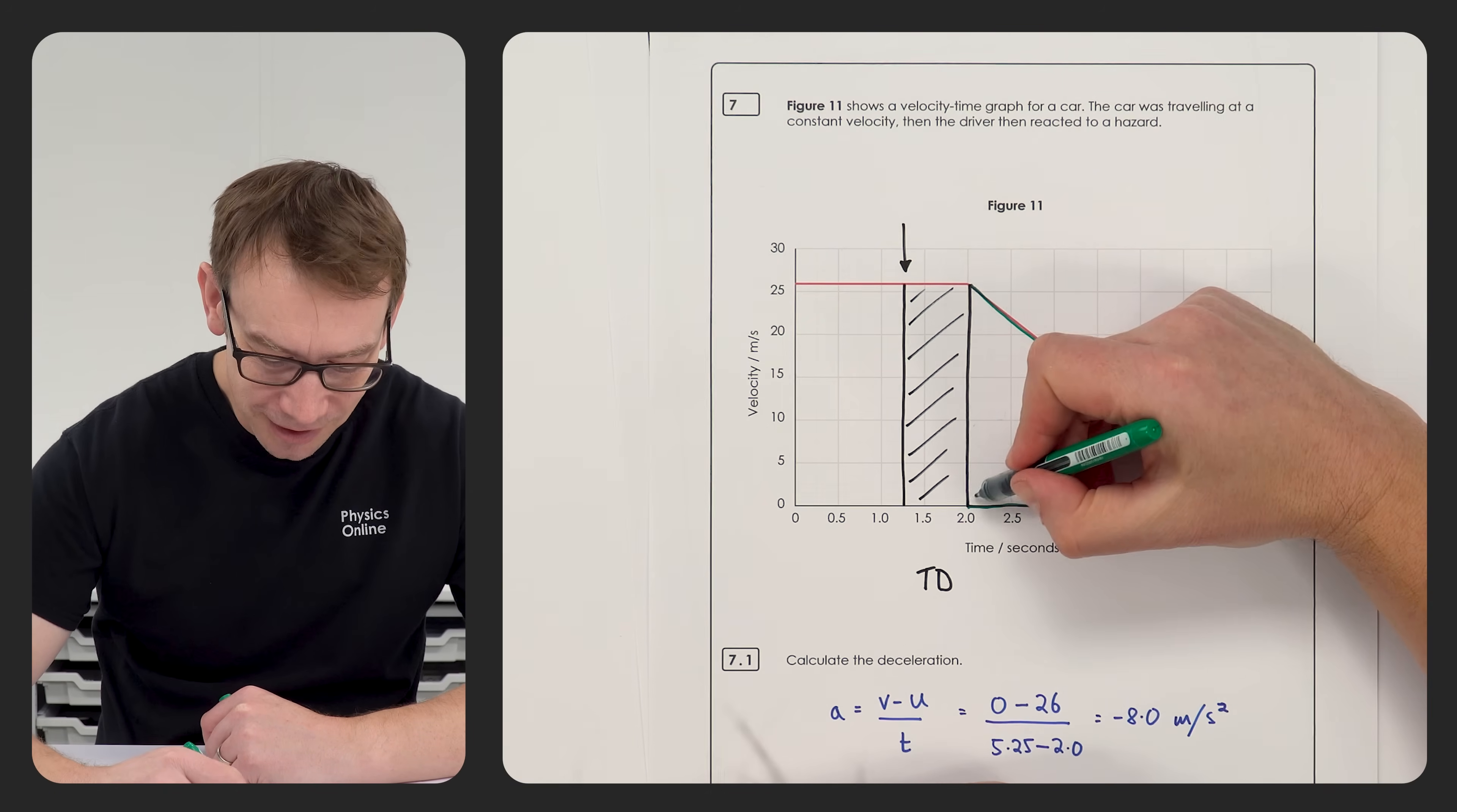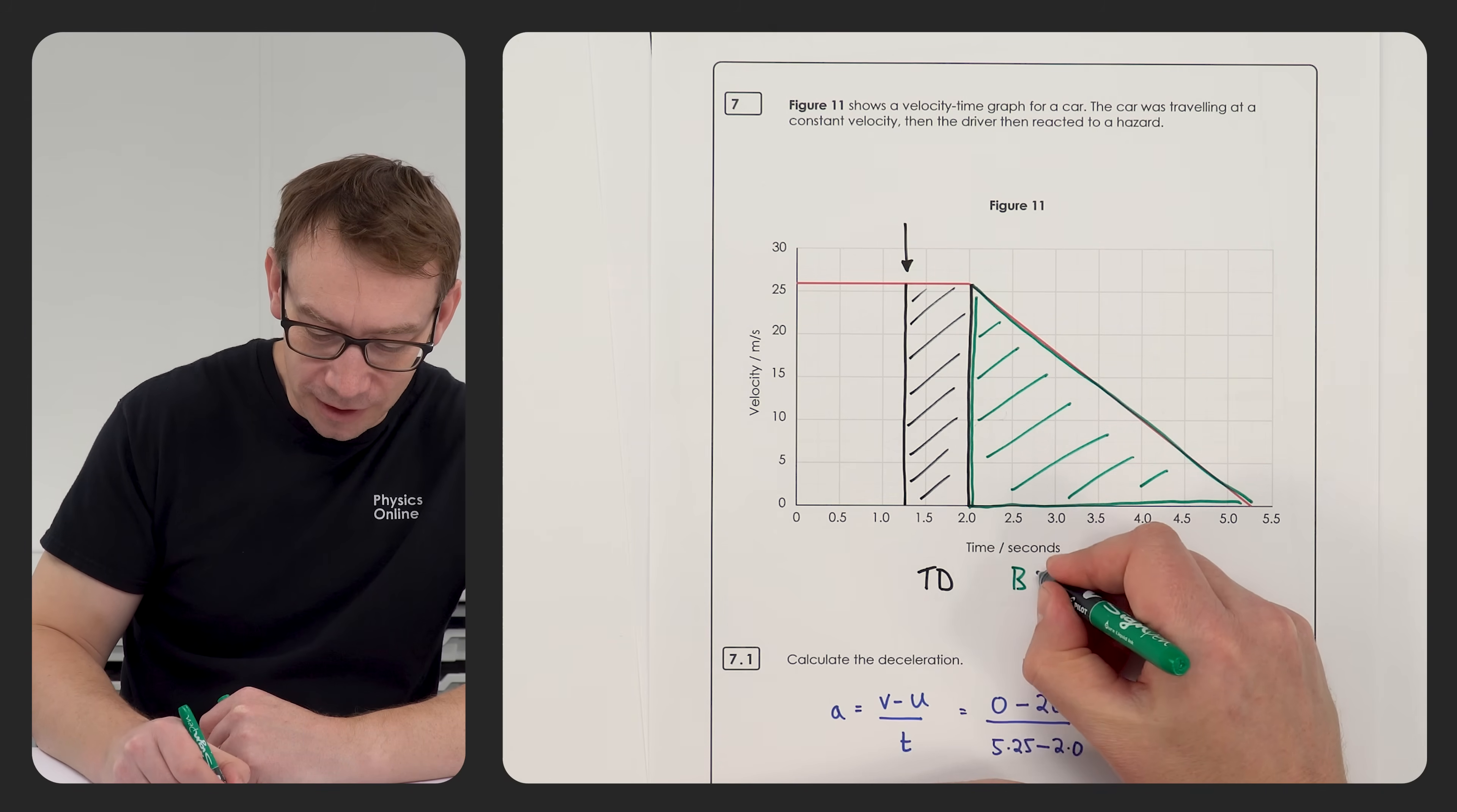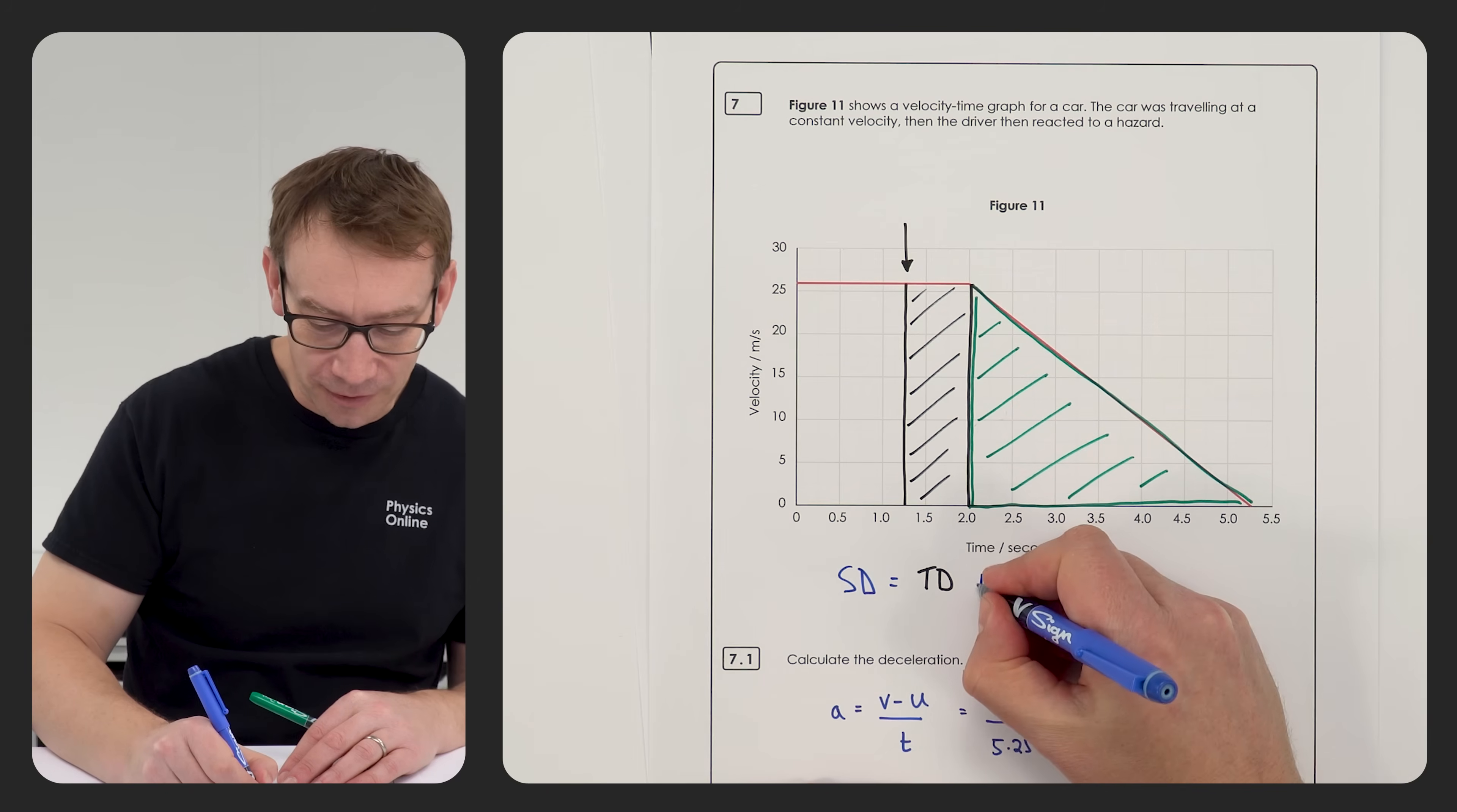And there's going to be this distance here under the line, this big triangle up here, excuse it's not super neat, and this area here is going to be equal to the braking distance. And of course the total stopping distance is going to be equal to this area plus this area.